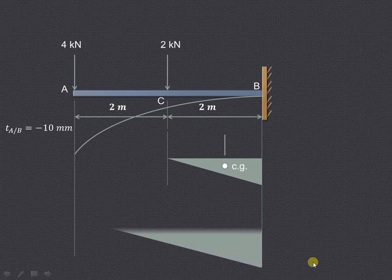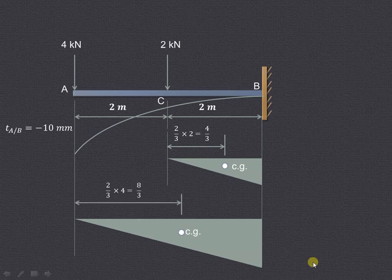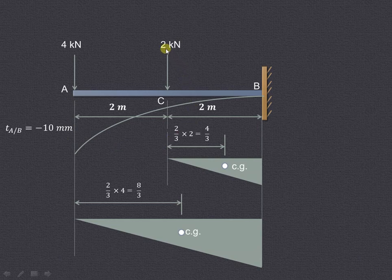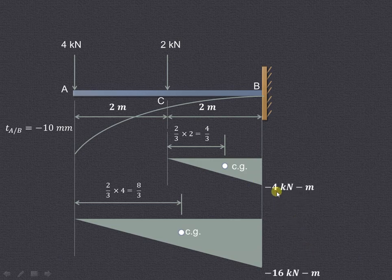Now let us understand how to solve this example using the moment area method. The deflection of the beam is shown, and the maximum deflection TAB equals −10 mm (negative because it is downward). The 2 kN point load acting at point C produces a moment of 2 × 2 = 4 kN·m in the anticlockwise direction from C towards B. Since it acts downward, this moment is considered negative, and the bending moment diagram due to this load is a triangular shape.